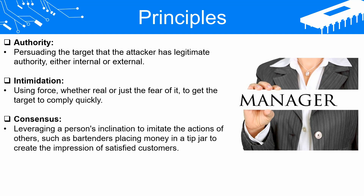Consensus. Leveraging a person's inherent inclination to imitate the actions of others, or what they have purportedly done in the past, is referred to as consensus or social proof. For example, bartenders place money in their tip jar to create the impression that previous customers were satisfied with the service. Individuals may write their name on a railing at a tourist attraction since numerous other names are already present, or halt on a street to join a gathering merely to discover what is happening. Similarly, an attacker may allege that an unavailable worker guaranteed a significant discount on a purchase, pressuring the targeted salesperson to act immediately.